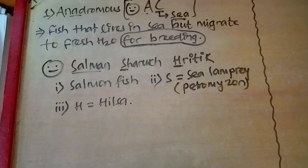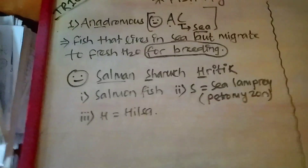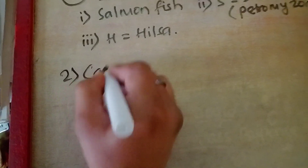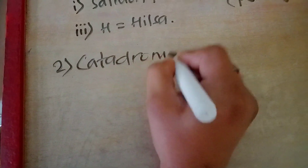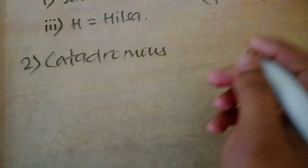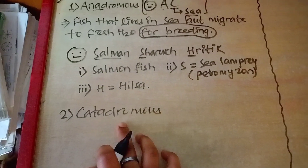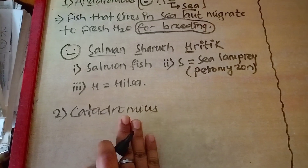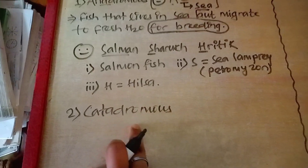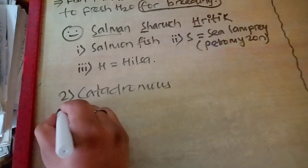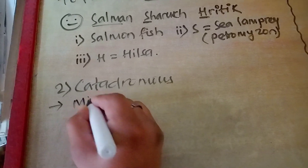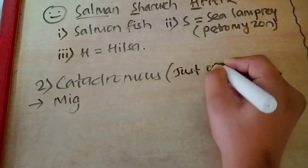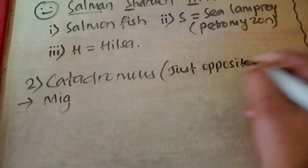The second type of migration is catadromous. Catadromous is just the opposite of anadromous — it is a fish that lives in fresh water but migrates to sea for breeding. It doesn't need any special trick; just remember it is the opposite of anadromous.